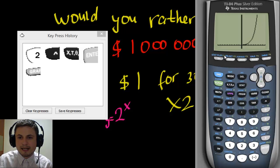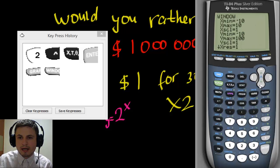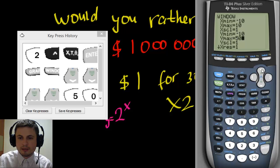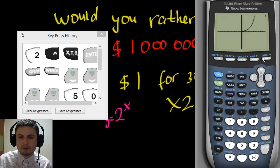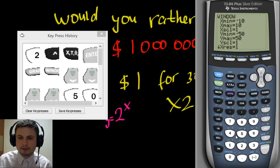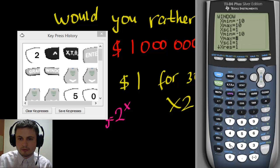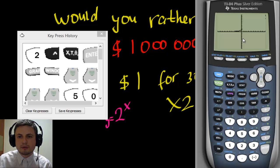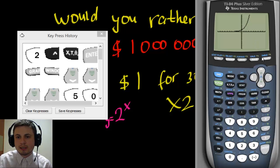I want to zoom in a bit, so I'll change Y max to 50 and Y min to negative 50 to center it. Let's see — still not showing the origin well enough. Resetting to the original default values — negative 10 for X min — gives us the standard view. This is what the exponential function looks like: it stays low and then shoots dramatically upward.